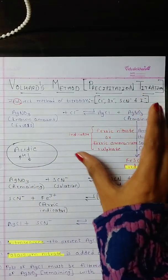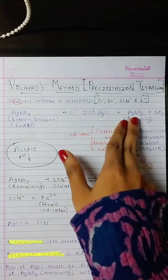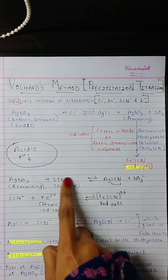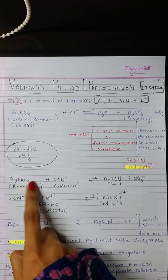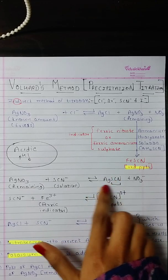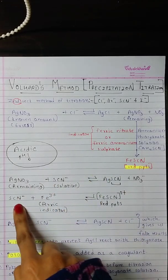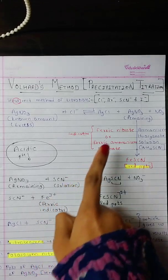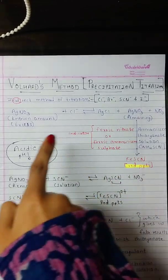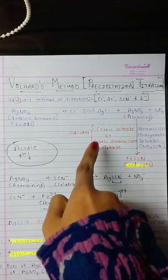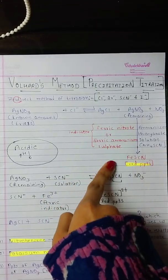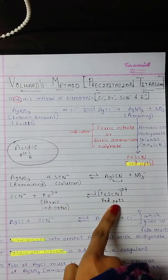Let us see the detailed form of this back titration. The remaining amount of AgNO₃ is reacted with ammonium thiocyanate solution, which has SCN⁻ ions. These SCN⁻ ions react with the remaining silver nitrate to give silver thiocyanate (AgSCN). This silver thiocyanate then reacts with the ferric indicator. The ferric indicator is either ferric nitrate or ferric ammonium sulfate — note that both are correct answers if asked in an exam. This ferric indicator is used to obtain the red precipitates.